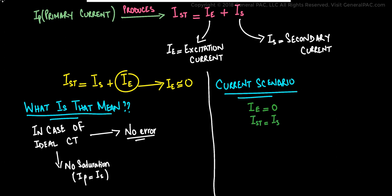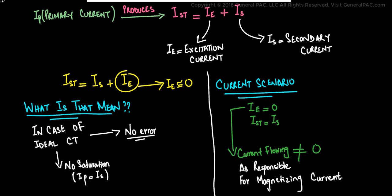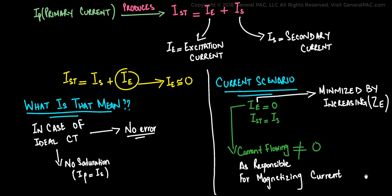IE is zero or it is a negligible value. So practically speaking, IE, the impedance flowing through the magnetization branch, cannot equal zero because it is responsible for producing the magnetizing current in a current transformer. And that is required for it to operate in a practical sense. But it can be minimized by increasing the value of the excitation impedance.